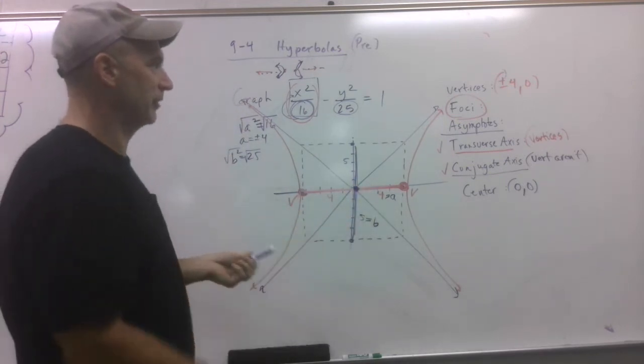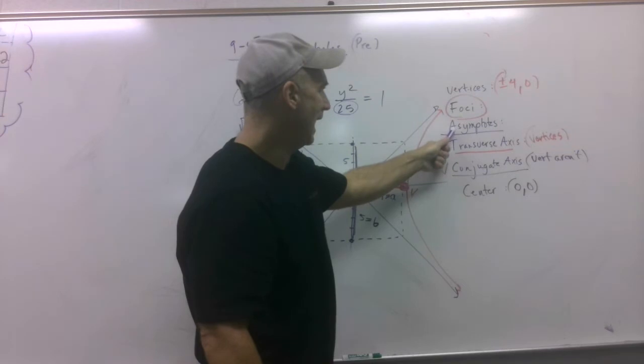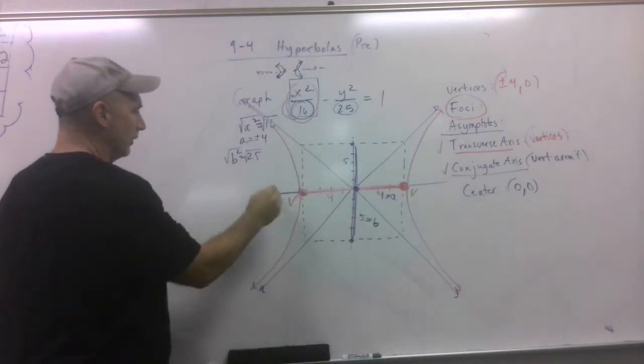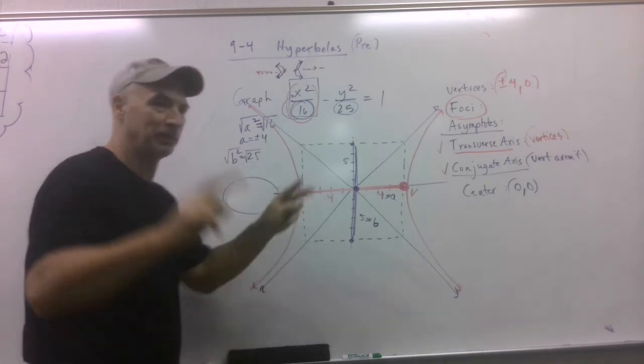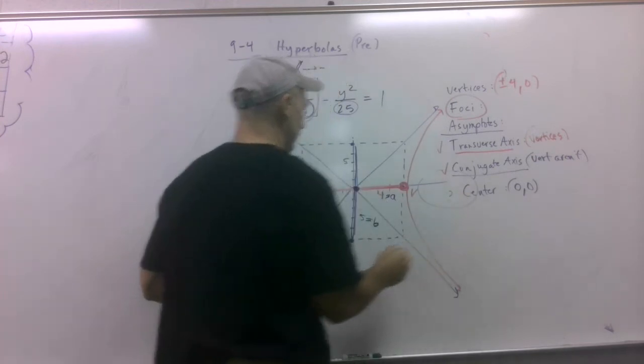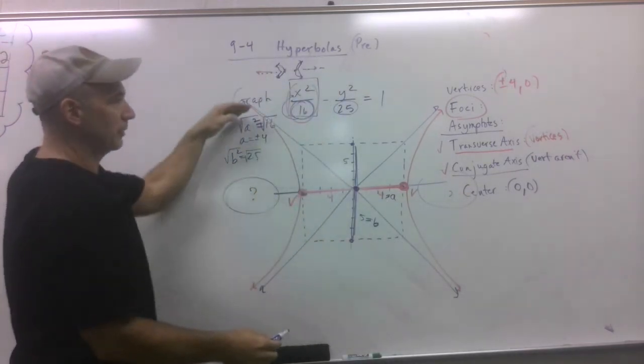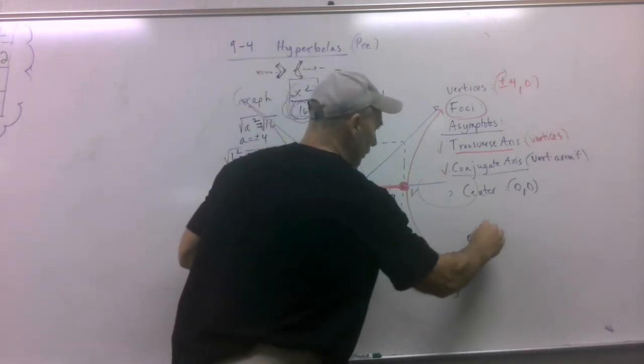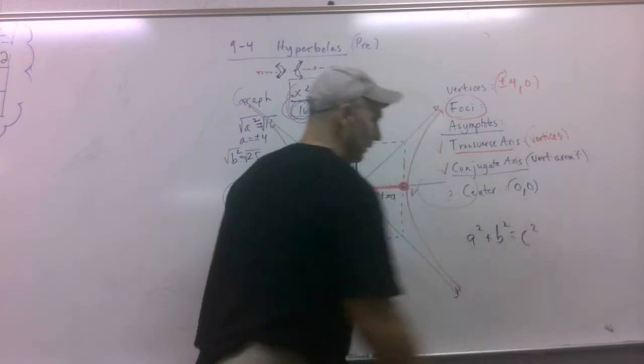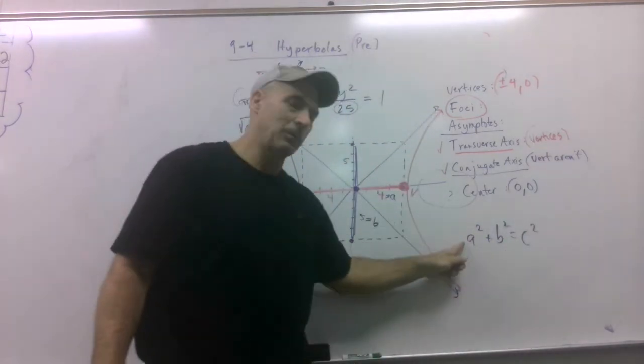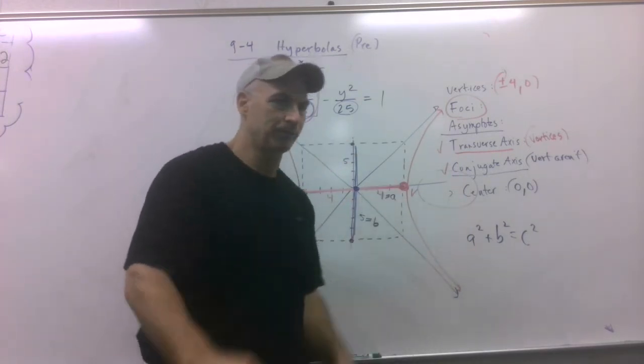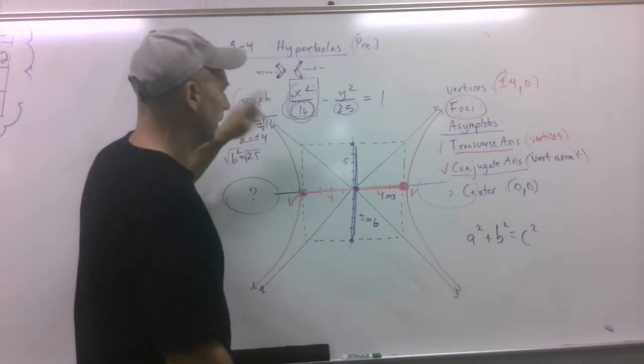So now, two things left. Foci and asymptote. Well, let's find the foci first. Remember, a parabola always has a focus. That's the focal point. And we have one over here, too. We're like, okay, well, where is it? Well, hyperbolas have this other equation. A squared plus B squared equals C squared. Have you seen that before? It looks like the Pythagorean theorem. It just isn't. We're not dealing with right triangles.